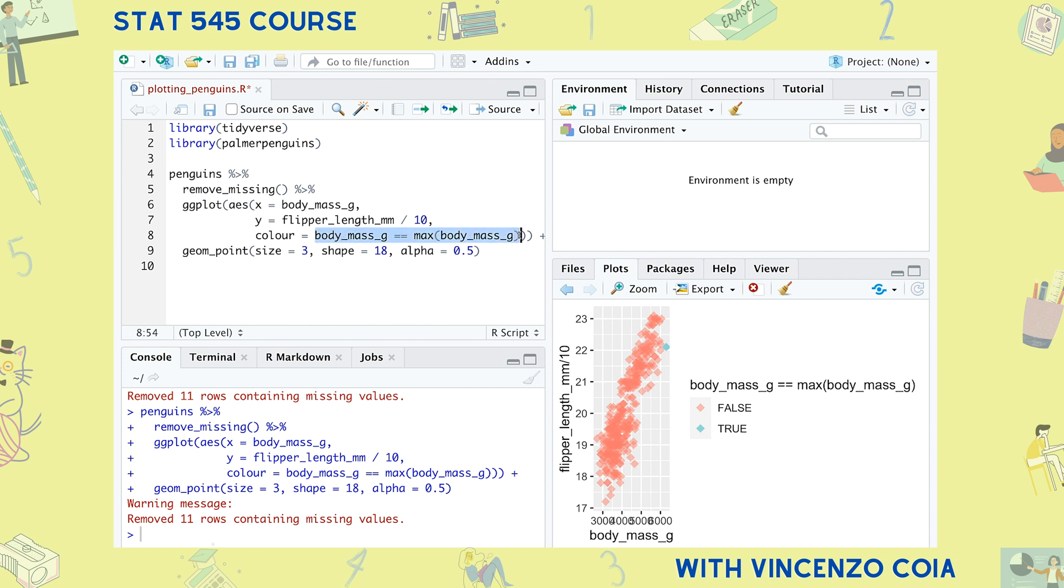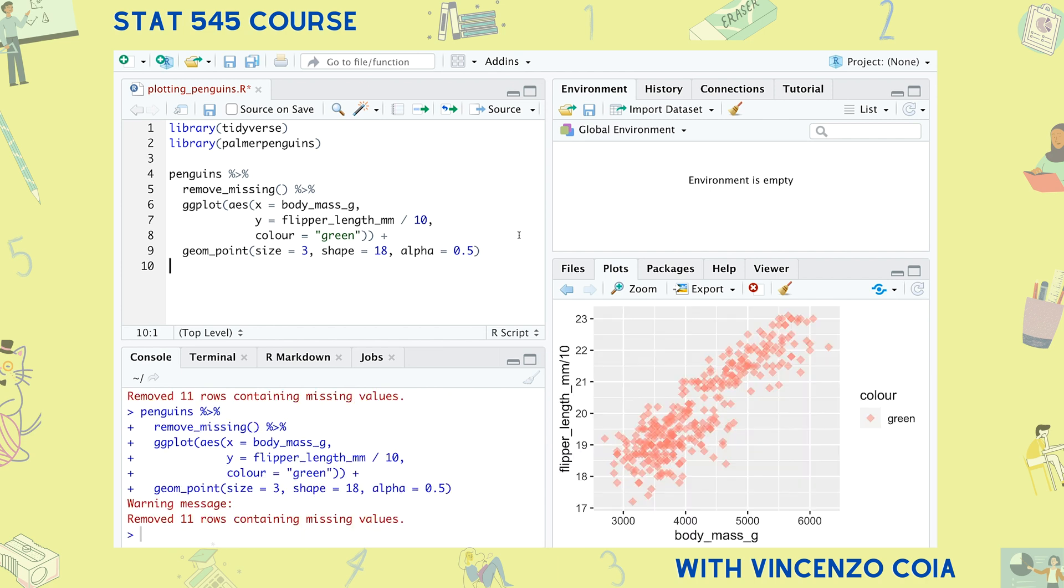This is also a source of mistakes. If we want to color our points green, setting color to green in the aesthetic function is really just making a new column in your data whose entries are all the word green.